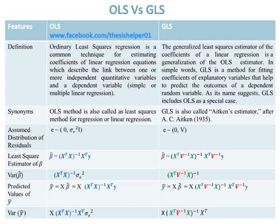The assumed distribution of residuals in OLS is E ~ (0, σ²I), where σ² is the variance and I is the identity matrix. While the assumed distribution of residuals in GLS is E ~ (0, V), where V is the variance due to random effects.